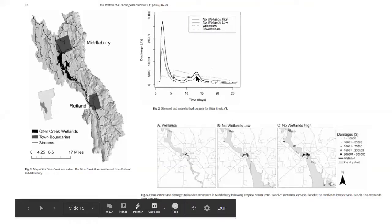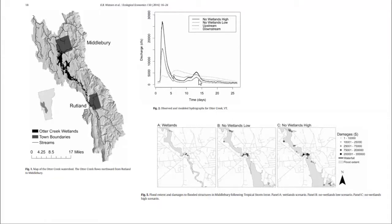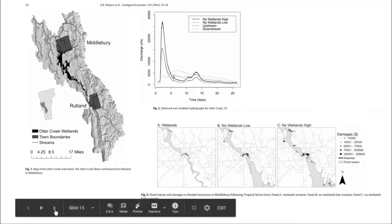This graph is absolutely flattening the curve — the same concept as the pandemic model. This model shows that without wetlands, you get this giant spike of water over a very short period of time, causing a huge amount of destruction. If you do have a wetland complex, it slows the water down, the curve is flattened. We can flatten the curve on flood damage if we have wetlands. Wetlands help us flatten the curve.